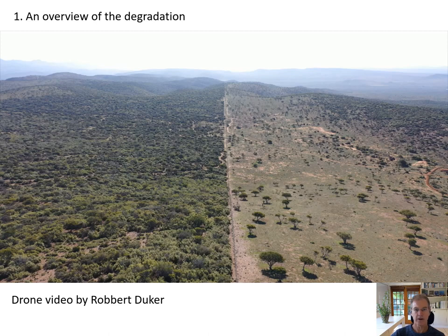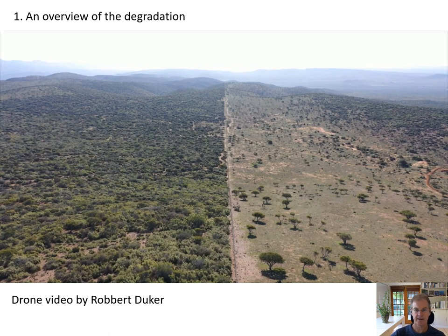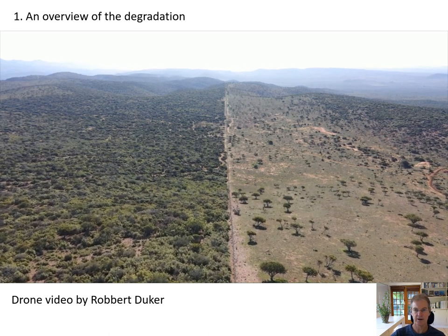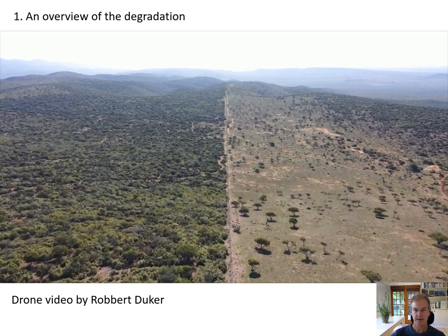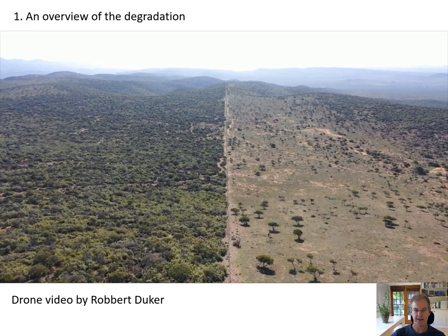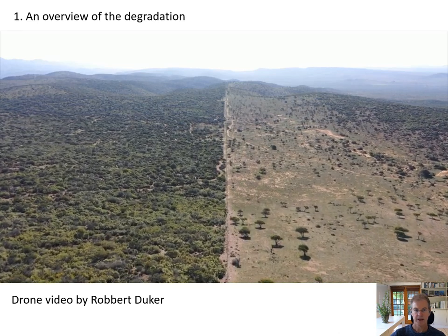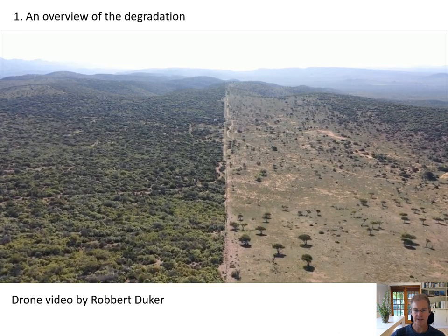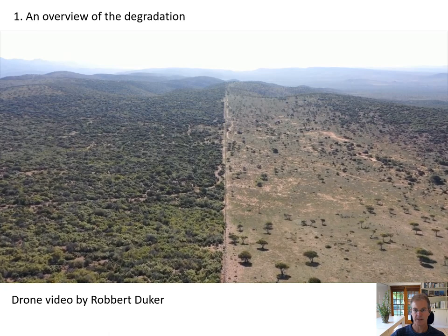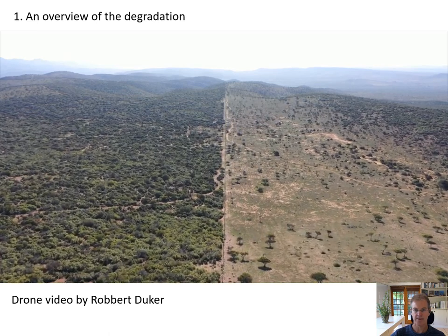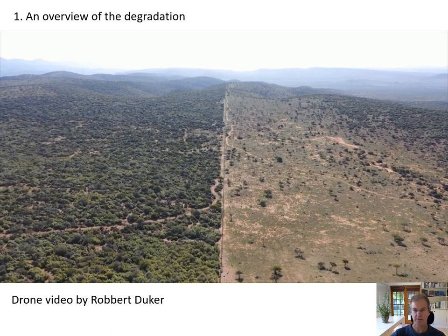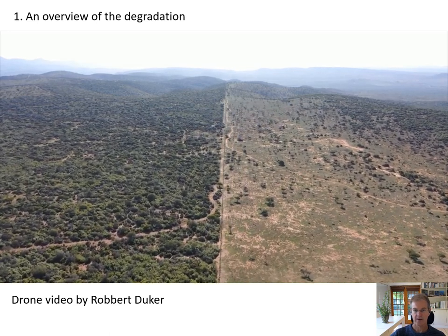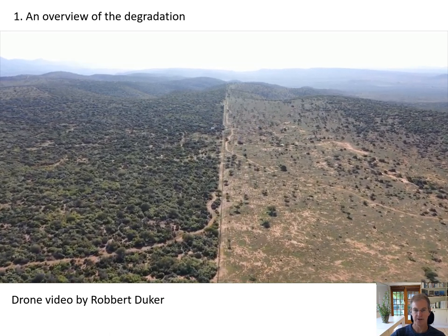Restoration of Speckboom Thicket has the potential for pioneering a route forward for this UN Decade, showing the rest of the world that restoration at the scale of a million hectares is feasible. But let's start with having a look at the degradation we are needing to tackle. The stark contrast between intact thicket and degraded thicket can be seen along numerous fence lines in the eastern and western Cape. This particular video is in the Sundays River Valley, south of Kirkwood.